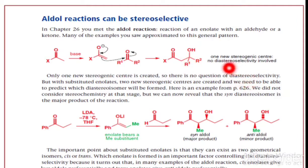But with a substituted enolate, if two new stereogenic centers are created, we need to be able to predict which diastereomer will be formed. Here is an example of a diastereoselective aldol reaction. We did not consider the stereochemistry at that stage, but we can now reveal that the syn diastereomer is the major product of the reaction.